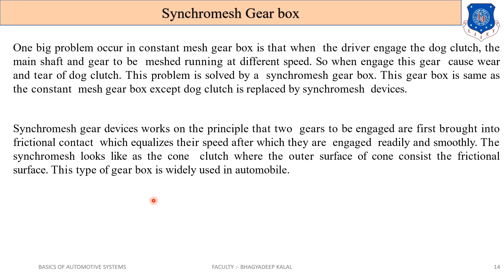Next is the synchromesh gearbox — this is a very important gearbox, widely used nowadays. One big problem in the constant mesh gearbox is that when the driver engages the dog clutches, the main shaft and the gear to be meshed are running at different speeds. Engaging them causes more wear and tear on the dog clutches. This problem is solved by the synchromesh gearbox, which is the same as the constant mesh gearbox except that the dog clutches are replaced by synchronizing devices.